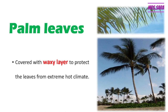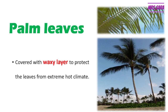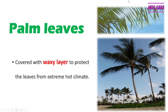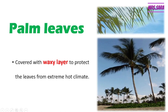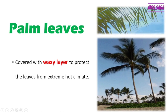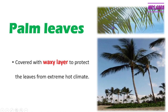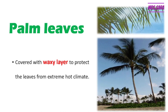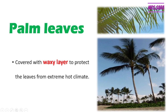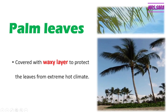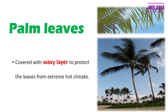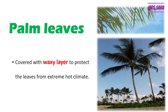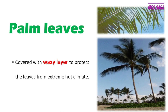Our second example is the palm tree leaves. As you can see, the leaves of the palm tree, Primary 4, are covered with something called a waxy layer — like wax — to protect the leaves from the extreme hot climate.